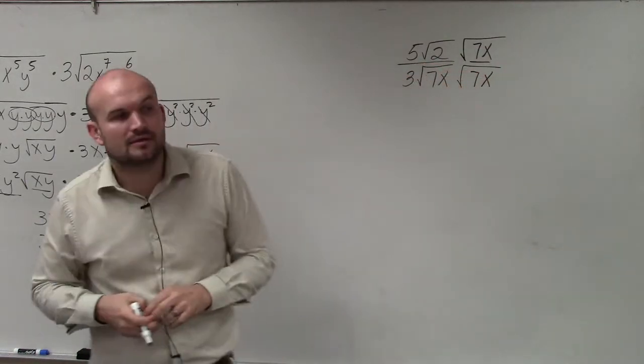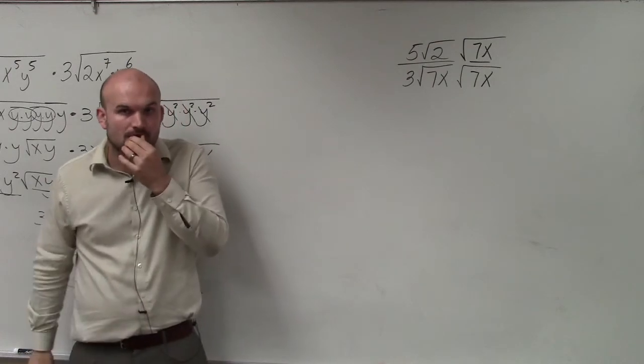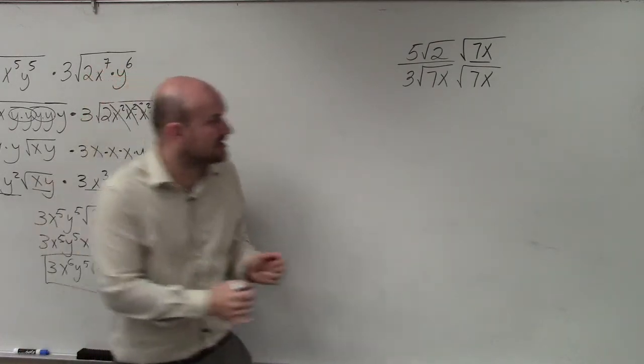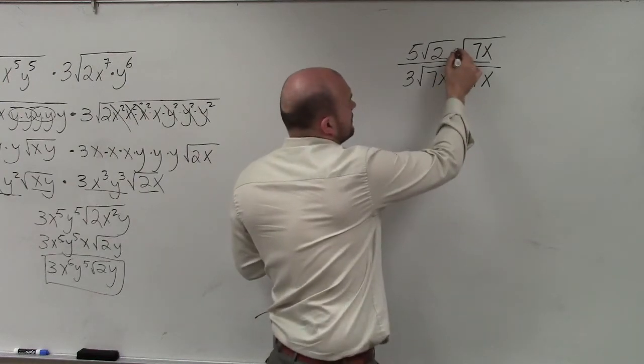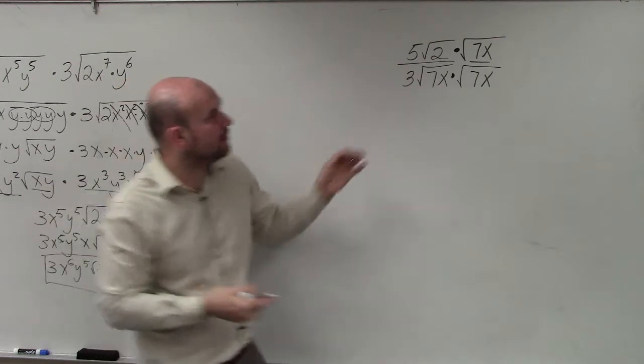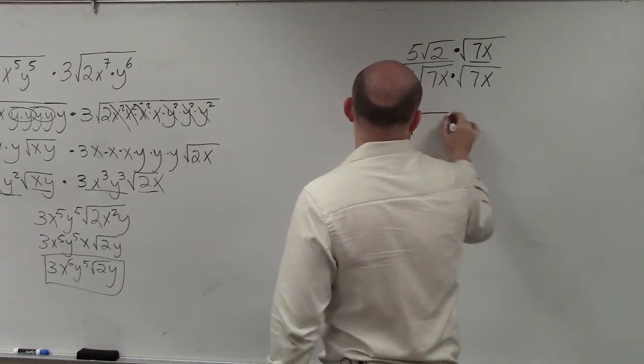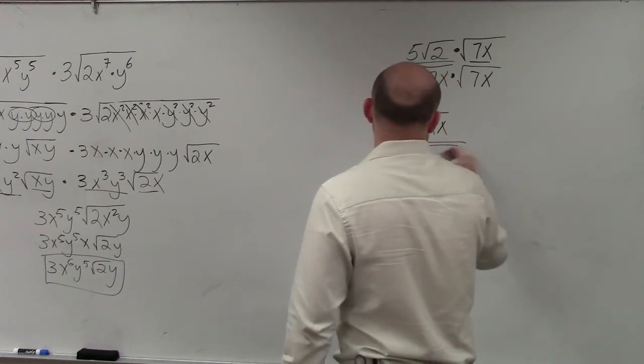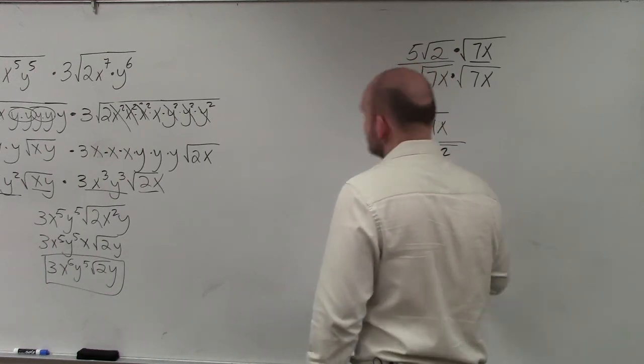So I can multiply by the square root of 7x on both sides. Now, when multiplying by the square root of 7x on both sides, what I obtain is 5 over 14x divided by 3 times 7 squared x squared.